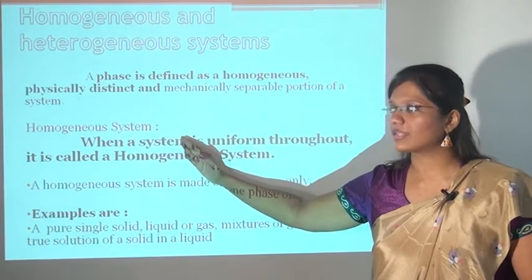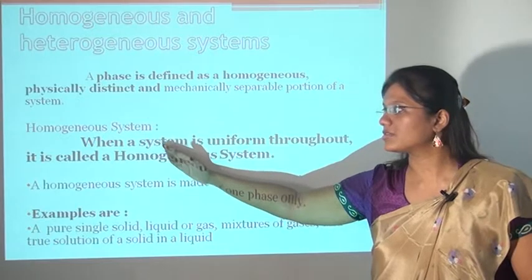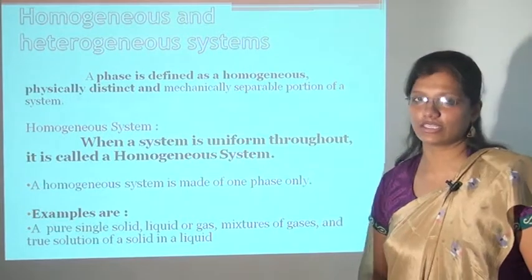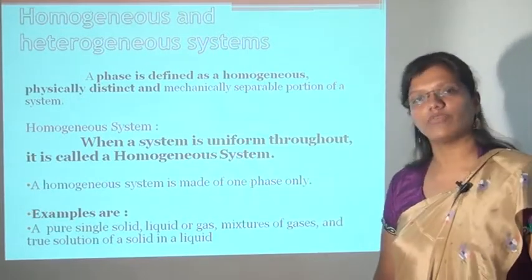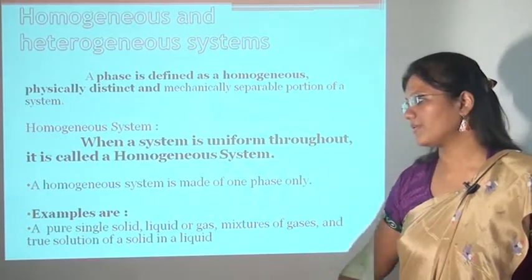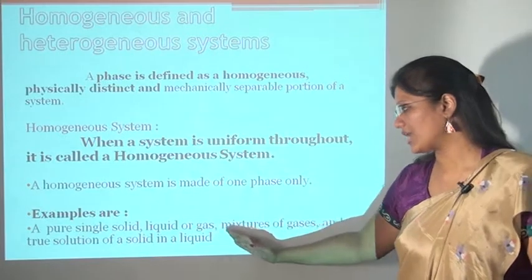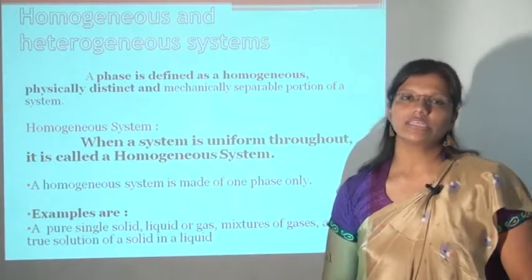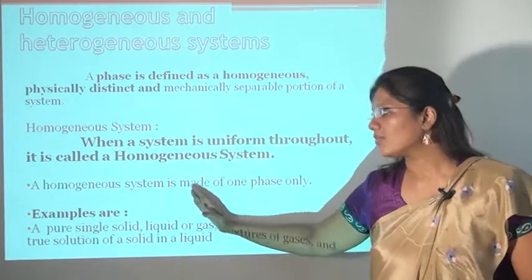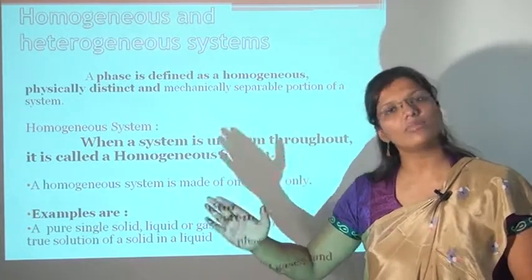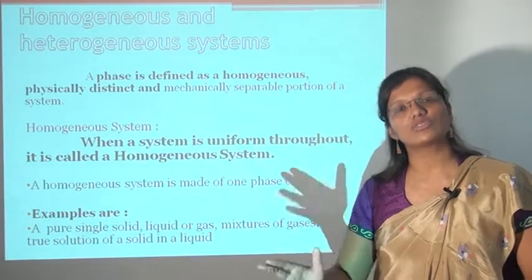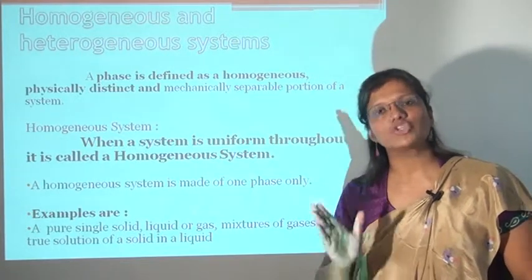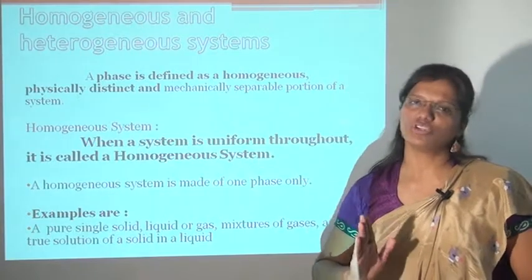Now, two types of systems: homogeneous system and heterogeneous system. First is the homogeneous system. When a system is uniform throughout, it is called a homogeneous system. A homogeneous system is made up of one phase only. Examples of homogeneous systems are a pure single solid, liquid, or gas, mixtures of gases, and true solutions of solid and liquid. It should be in one phase only — then and then only it is known as a homogeneous system.